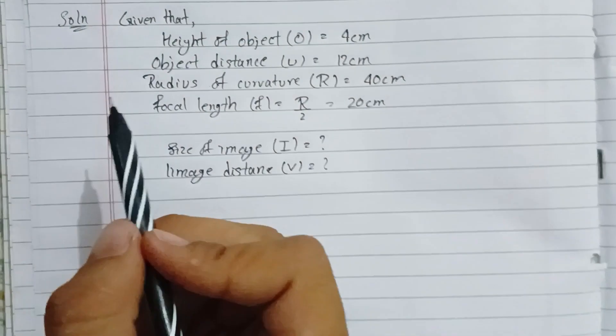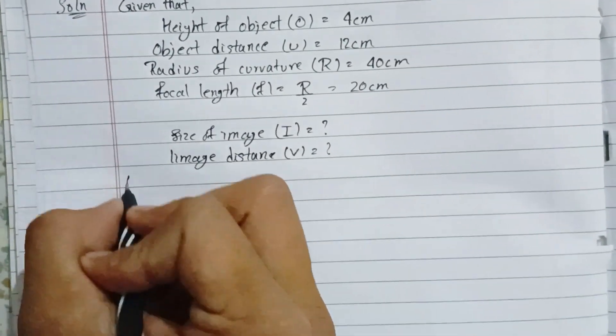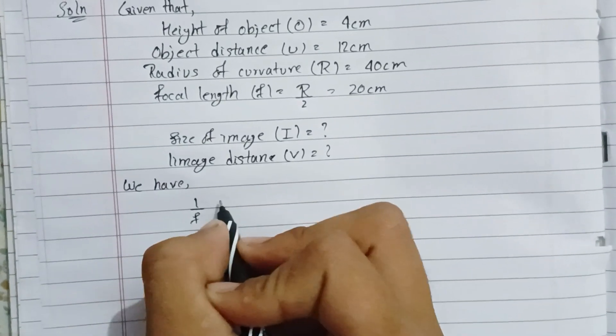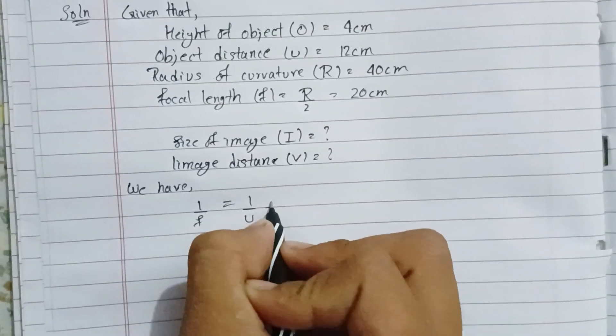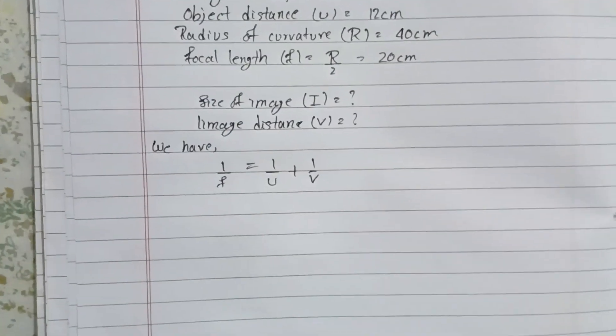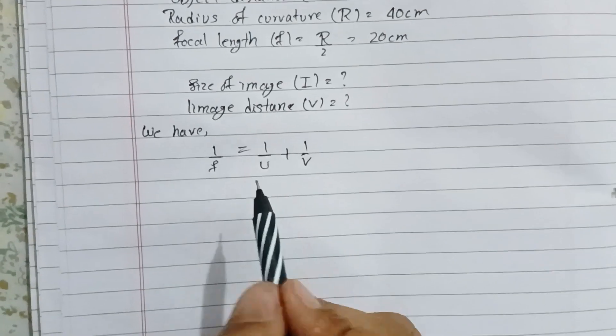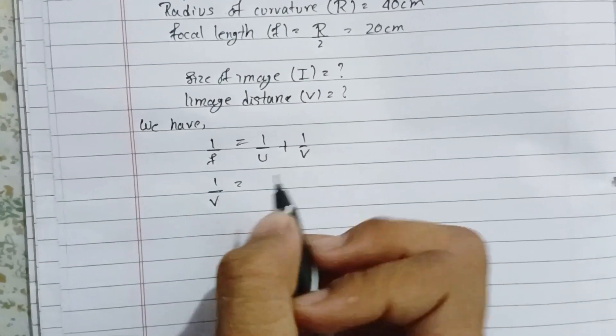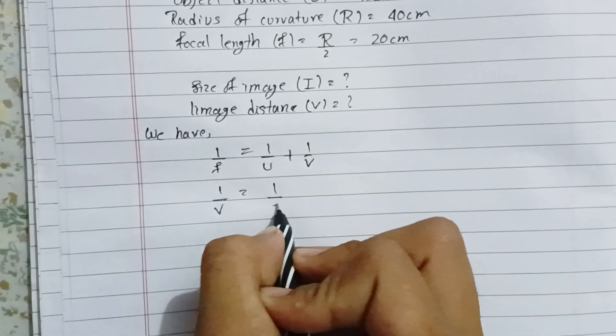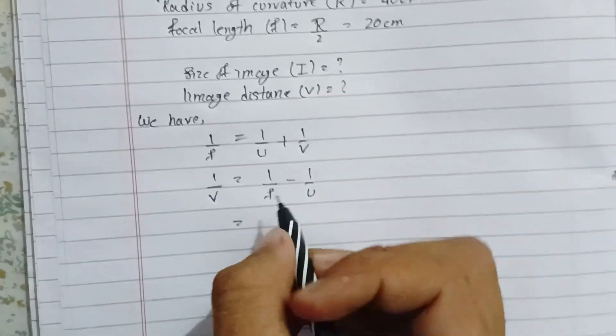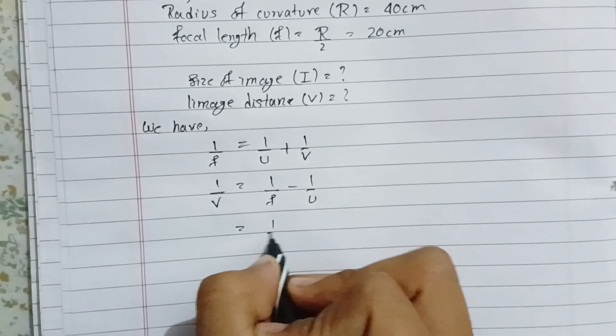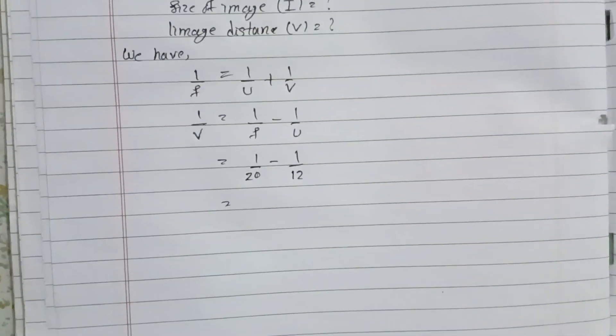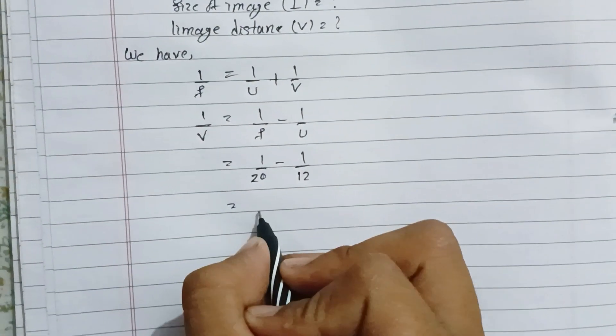We have 1 by f equals 1 by u plus 1 by v. So 1 by v equals 1 by f minus 1 by u. Substituting values: 1 by 20 minus 1 by 12.